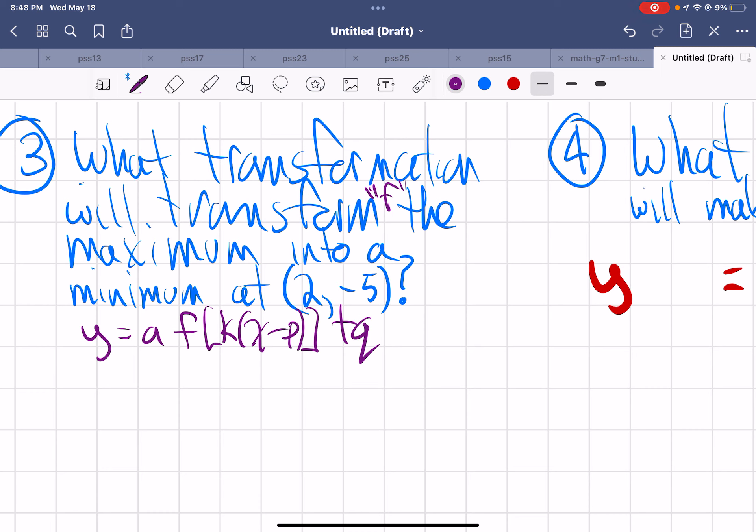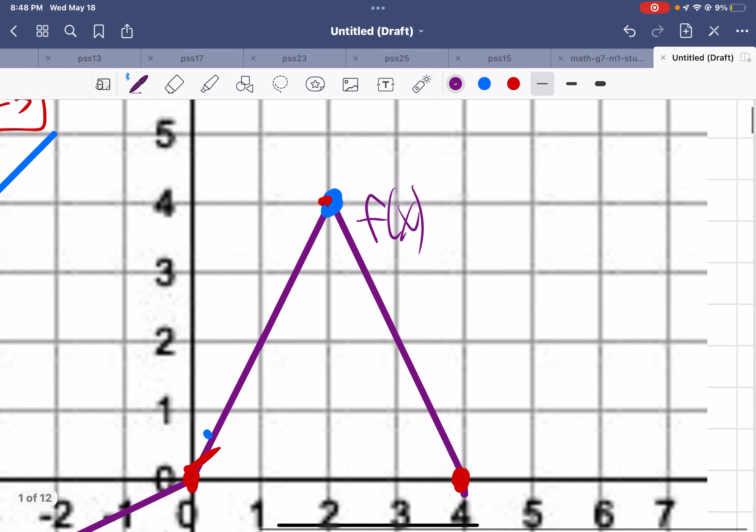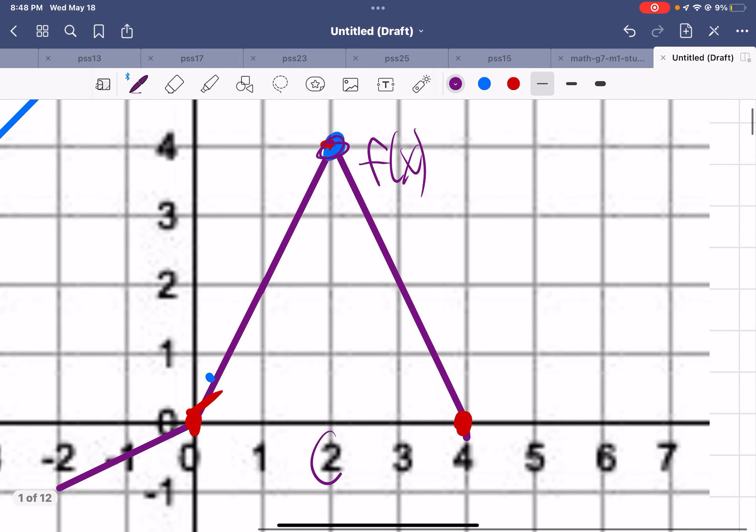So let's look at some things here. The first thing I probably need to do is to find the coordinates of that maximum. Let's do that. Coordinates of the maximum are 2 and 4. The coordinates of the maximum are 2 comma 4.